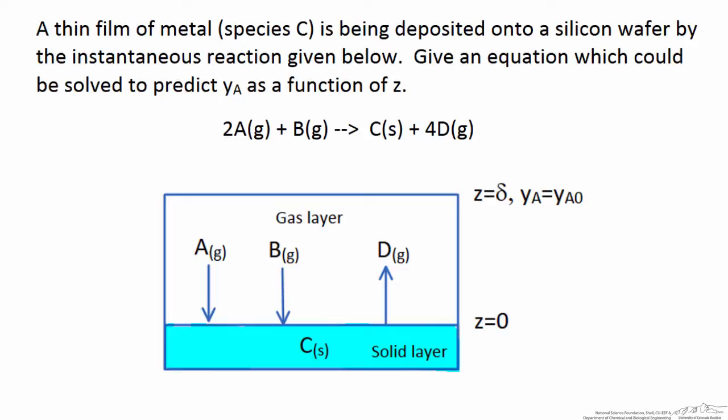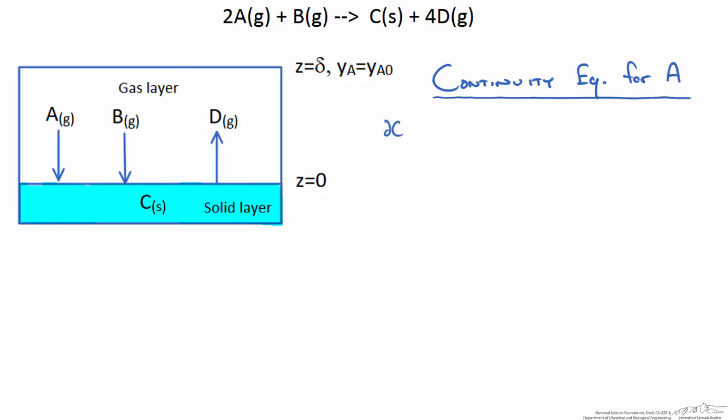We will start by writing out our flux equations. We start with the continuity equation for species A. We have dCA/dt plus the divergence of the flux of A, or del dot NA, and this is equal to our reaction term RA.